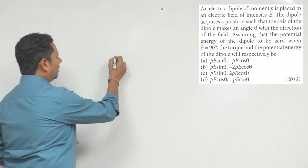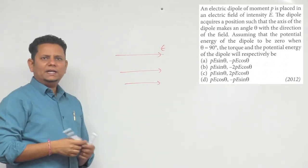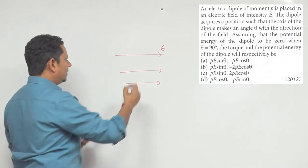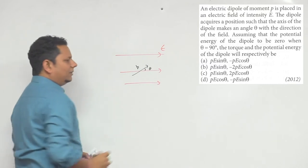The formula directly applies here. This is your electric field E. The dipole is placed such that it makes a certain angle theta. This is your dipole, and this angle theta is made with the electric field.